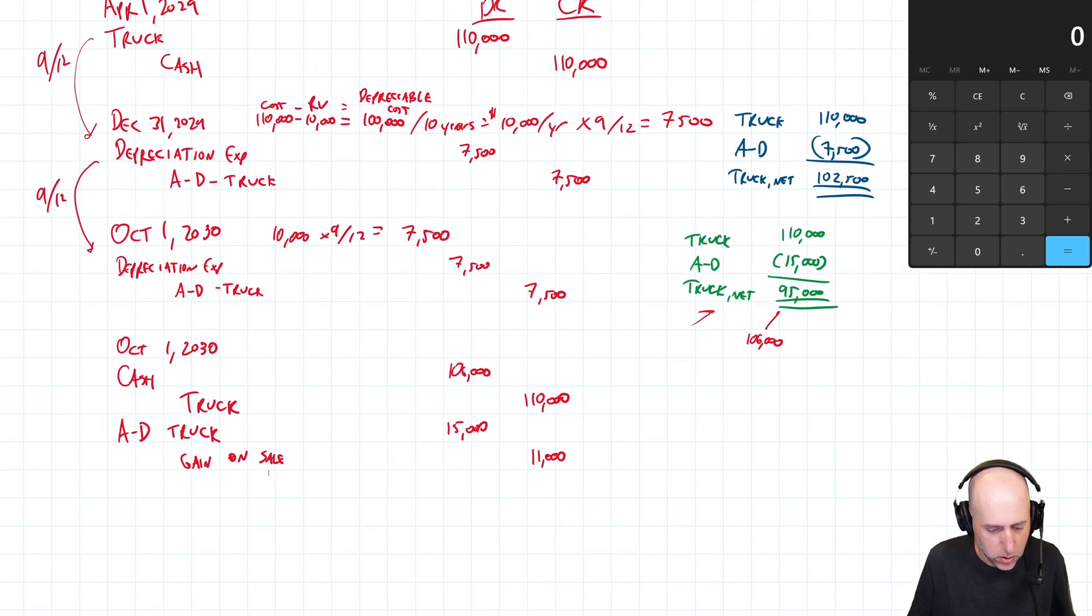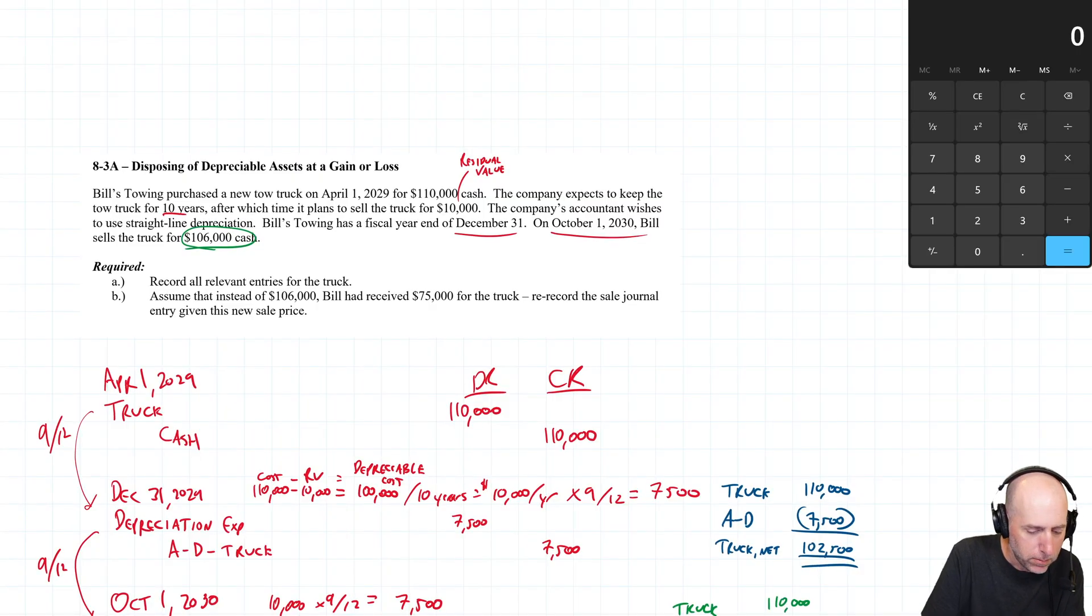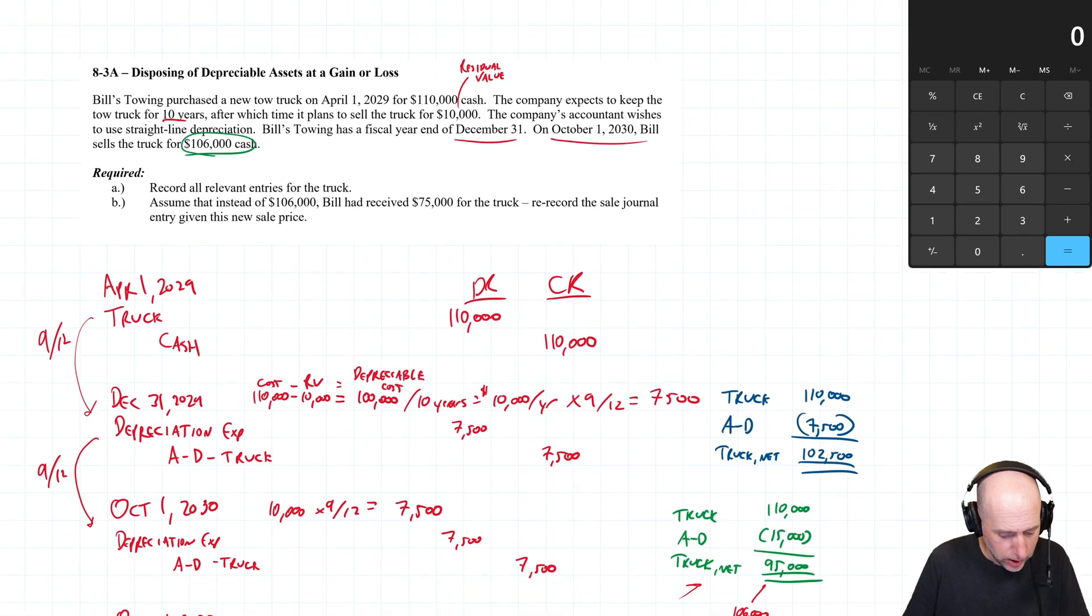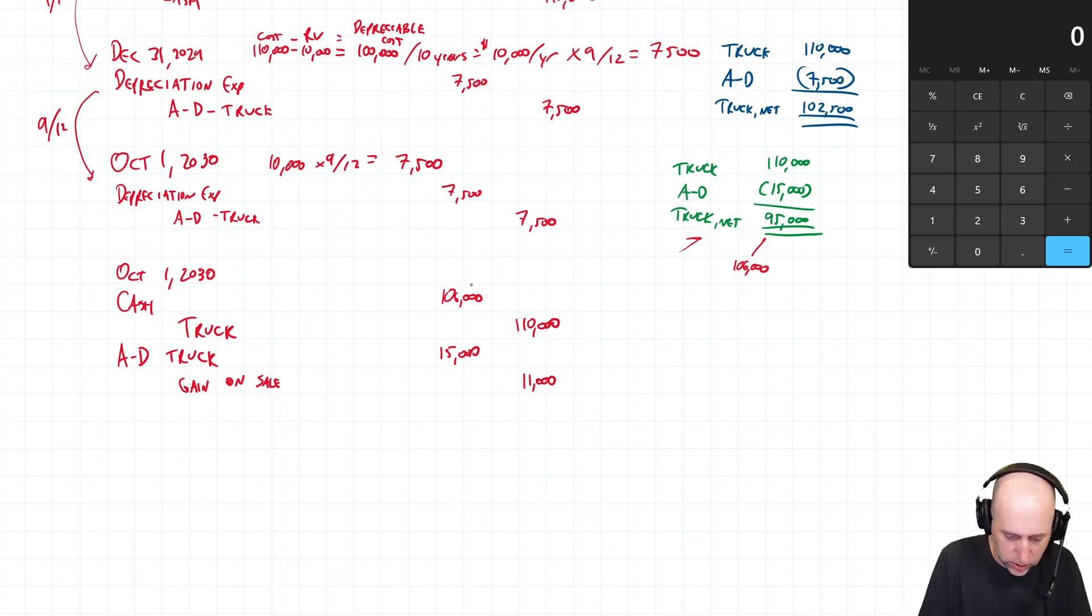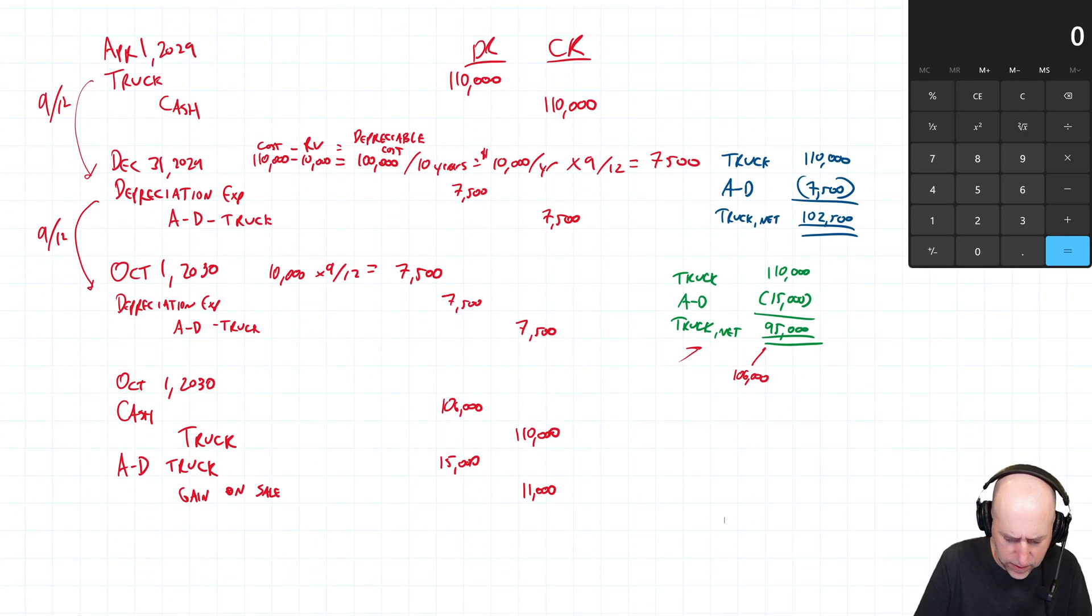Let's look on to part B. Part B says assume that instead of $106,000, Bill had received $75,000 for the truck. Re-record the sale journal entry given this new sales price. So all the other stuff is the same, the only difference is instead of $106,000 cash we got $75,000. Just eyeballing this, if we change this to $75,000, we still think it's a $95,000 truck. Everything up to now has been the same. We get paid $75,000. We got paid less than the accountant thought the truck was worth. That is representing a loss on sale as you will soon see.